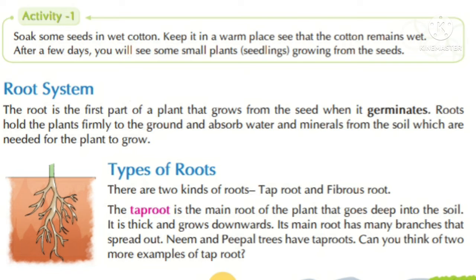Now root system. The root is the first part of a plant that grows from the seed when it germinates. Roots hold the plant firmly to the ground and absorb water and minerals from the soil, which are needed for the plant to grow.